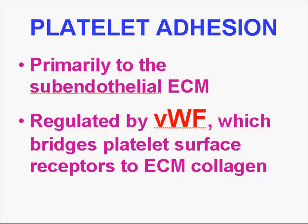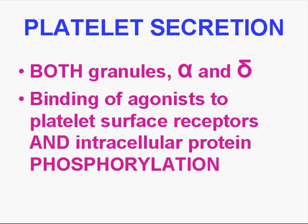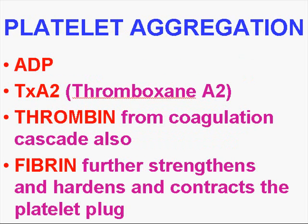Once you have platelet adhesion, the adherence is primarily to the subendothelial ECM. Von Willebrand's factor, along with other factors, provides the bridge between the surface of the platelet and the receptors to the ECM. The second phase is secretion of the contents of the alpha and delta granules, where binding of agonists to platelet surface receptors and intracellular protein phosphorylation takes place. In platelet aggregation, the compounds involved are ADP, thromboxane A2, and thrombin from the coagulation cascade, which is the main factor for the production of fibrin.